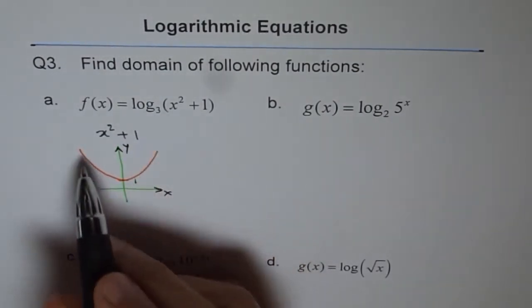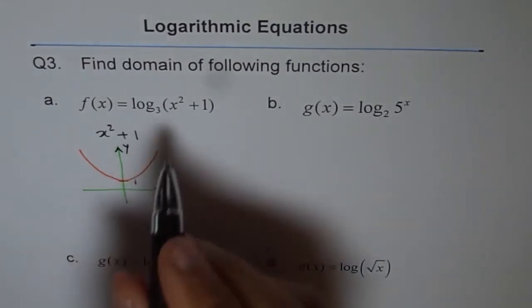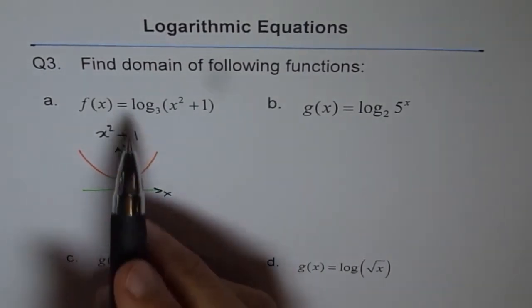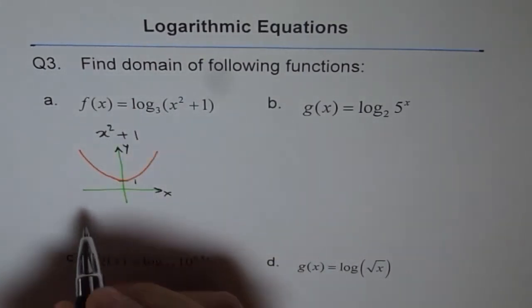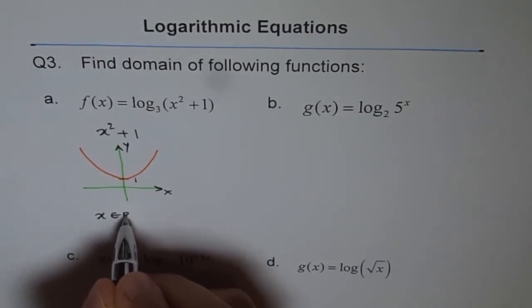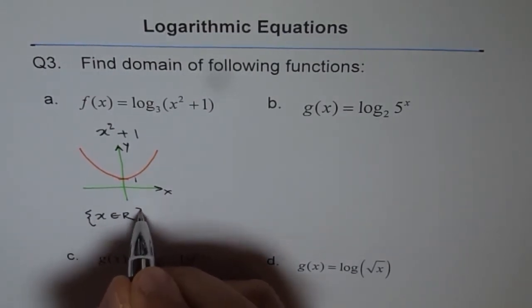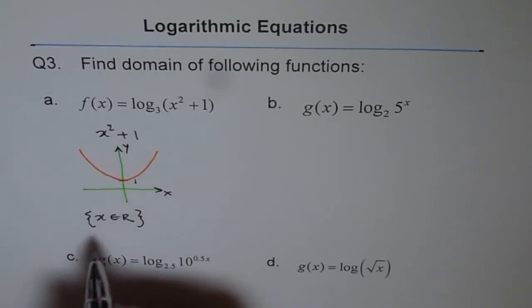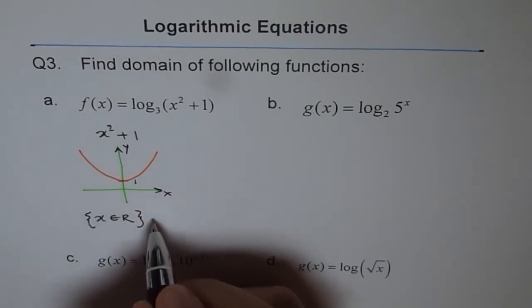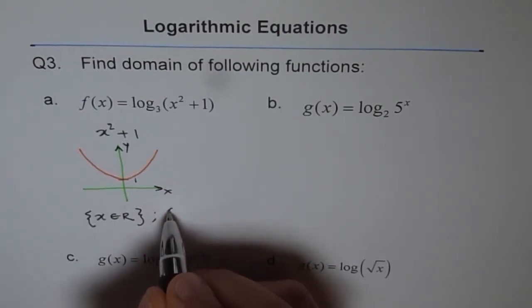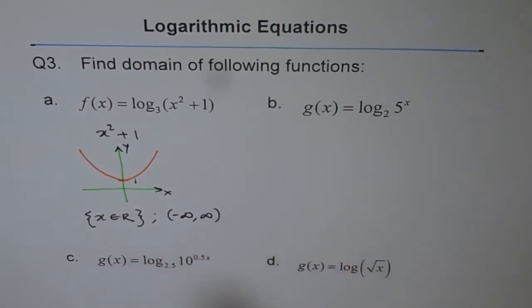your function x² + 1 is positive. And therefore the solution or the domain for this function is that x belongs to real numbers. So that is the domain of this function. And this can also be written as from minus infinity to plus infinity.